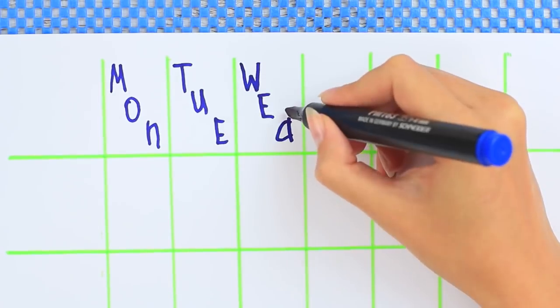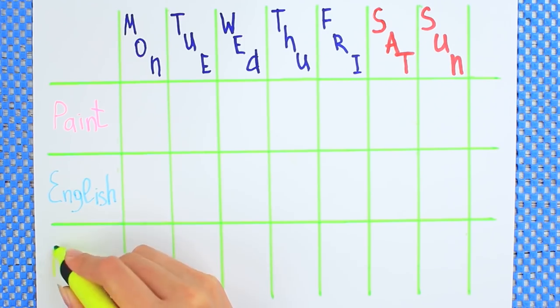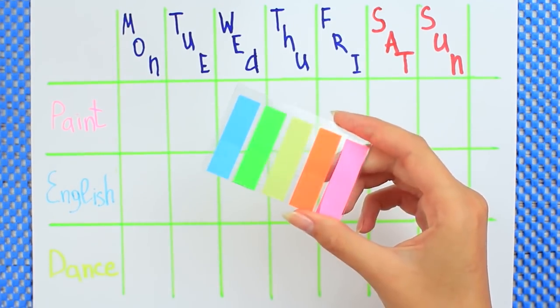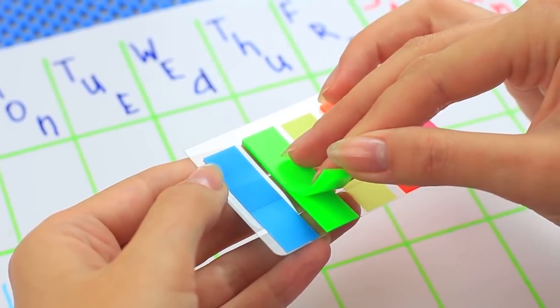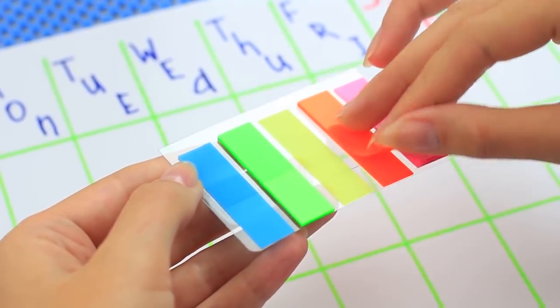Make as many lines as how many classes you attend. Write down weekdays in the top line. Put your classes into the first column. Attach bright stickers to the intersections of the days and classes and forget about mixing up the stuff.